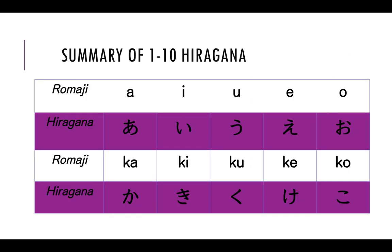There is a summary of the first ten hiragana: a, i, u, e, o, and ka, ki, ku, ke, ko.